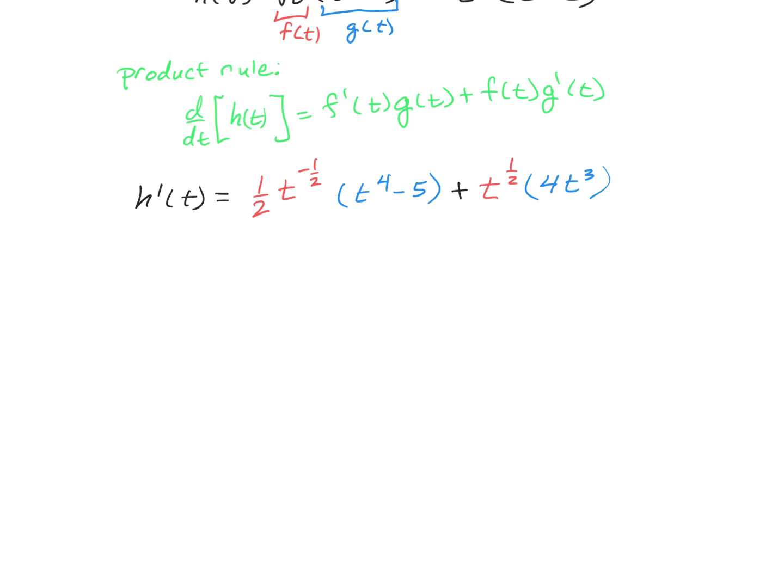There are different ways to write this. Some people like to factor out a common t^(1/2). When you do that, the power on the t drops to the negative one-half power, because 1/2 + (-1) = -1/2. That's times (t^4 - 5). Pulling out that common t^(1/2), we're left with 4t^3.